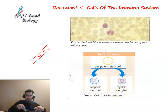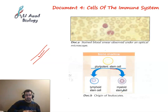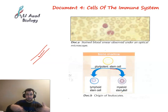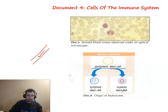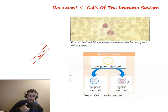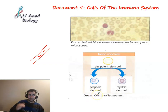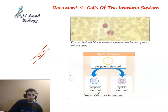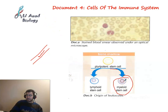These pluripotent stem cells can change into lymphoid stem cells or myeloid stem cells inside the bone marrow. Some of them change into lymphoid stem cells, some into myeloid stem cells, and the other part continues making mitosis. The myeloid stem cell produces many types of cells such as red blood cells and some white blood cells, while lymphoid stem cells produce the other types of white blood cells.